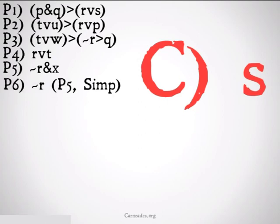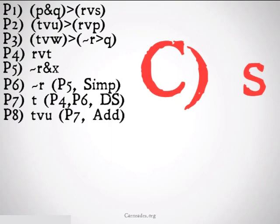We're going to get not R from premise five, simplification. Then we're going to get T using premise four, premise six, disjunctive syllogism. Then, like we said before, we're going to take that T, add a U, premise seven addition, and take that T and add a W, also premise seven addition, similar to the second problem we did in this video.